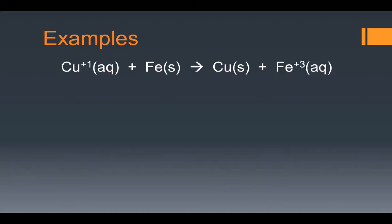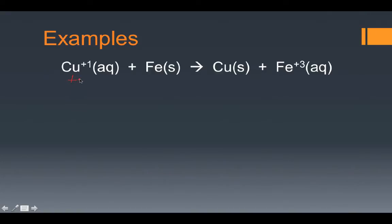Step two says we must assign oxidation numbers to all individual elements. These are all monoatomic ions, so their oxidation states are determined by their charges: copper is +1, iron is 0 (elemental/solid state), copper product is 0, and iron product is +3. This allows us to identify what is being oxidized and what is being reduced. Copper goes from +1 to 0 — a reduction in charge, meaning electrons are gained — so copper undergoes reduction. Iron goes from 0 to +3 — an increase in charge means a loss of electrons — so iron is being oxidized.